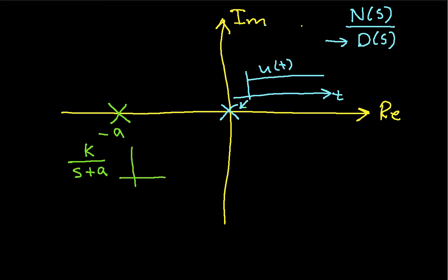We know that in the time domain, a constant over s plus a transforms to a decaying exponential. So, it's e to the minus a t u of t. Or again, this is t. Okay. So, basically, we have decaying exponentials if we're on the real axis to the left of the imaginary axis.